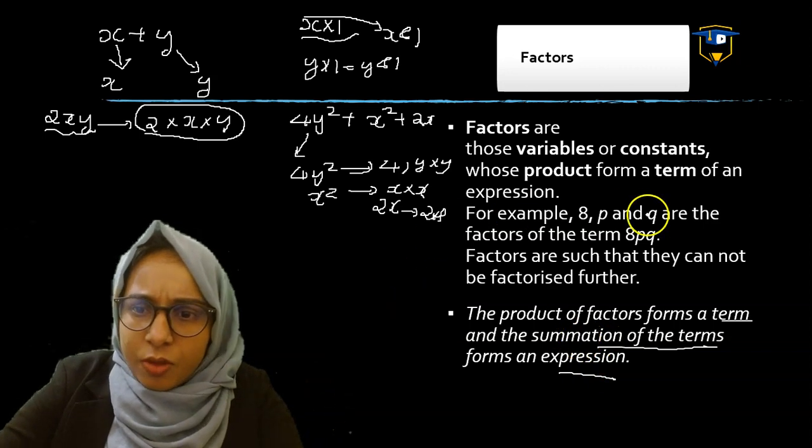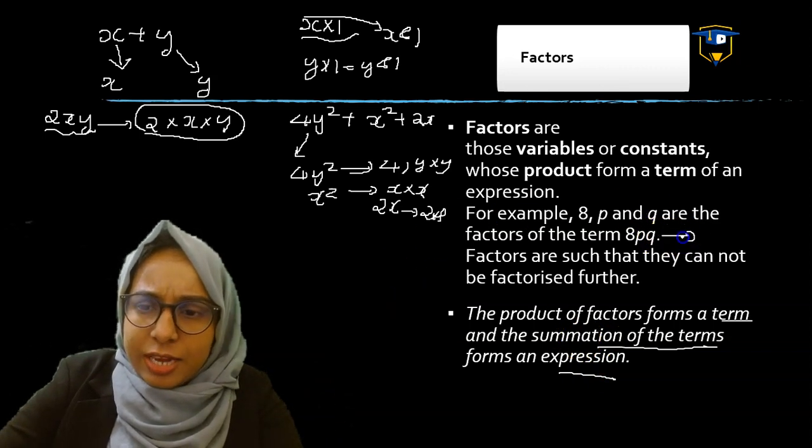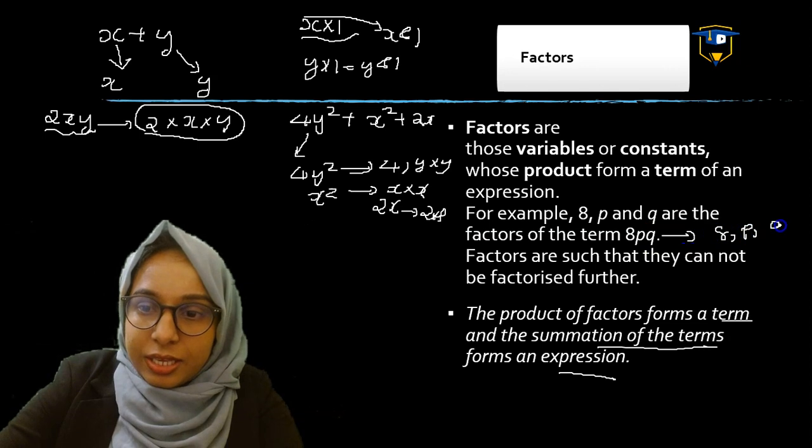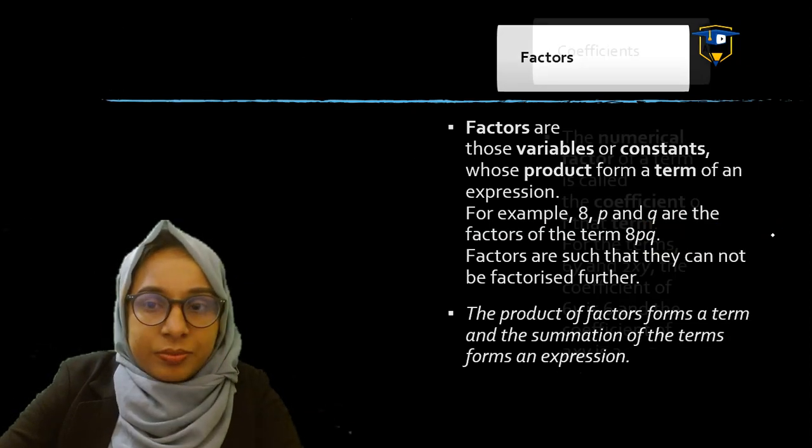One more example: 8pq — the factors are 8, p, and q.